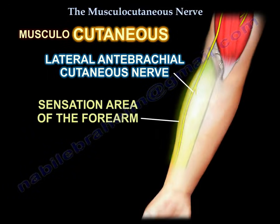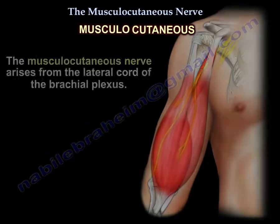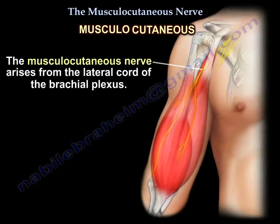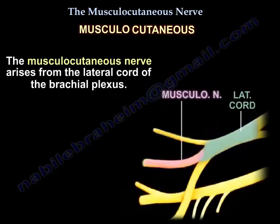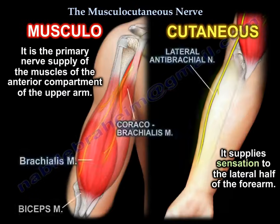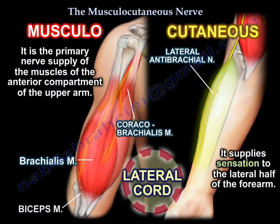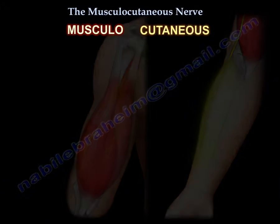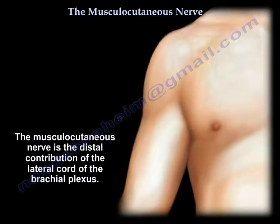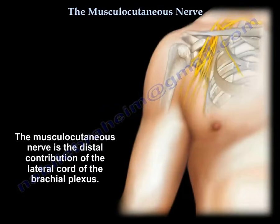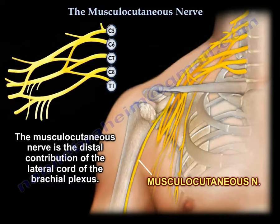How do I remember that? The musculocutaneous nerve arises from the lateral cord, and it supplies the lateral half of the forearm for sensation. So it supplies the muscles of the anterior compartment of the arm and supplies sensation to the lateral half of the forearm. The musculocutaneous nerve is the distal contribution of the lateral cord of the brachial plexus.